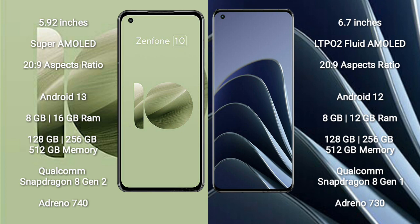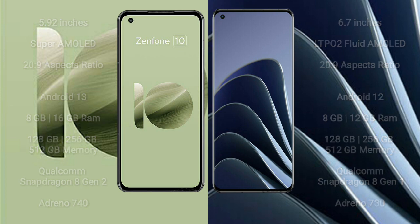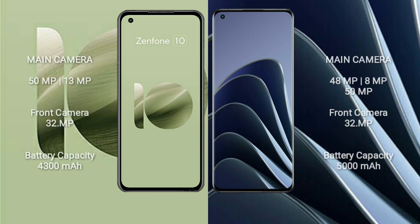OnePlus 10 Pro comes with 8GB or 12GB RAM and 128GB, 256GB, or 512GB internal storage. It features a Qualcomm Snapdragon 8 Gen 1 processor with Adreno 730 GPU.